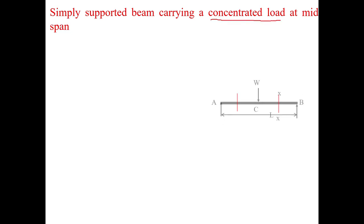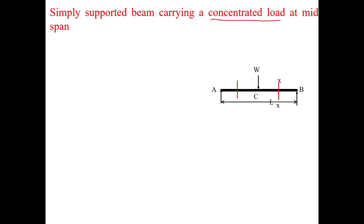Let us look at the first case where the beam is simply supported and carrying a concentrated load at the middle point. Here A and B are the simply supported ends and at C the point load of intensity W is applied. In simply supported beams we must find the reactions — unlike cantilever beams. In this case, since the body is symmetrical and loaded symmetrically, R_A and R_B will each be equal to W/2 in the upward direction.